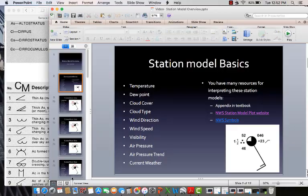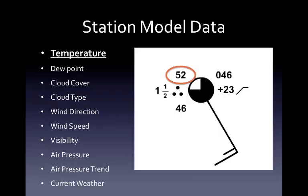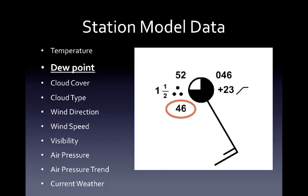To walk you through each one. On your station model, your temperature is going to be located right where you see this red circle. So 52 is going to be the air temperature at that time, which is 52 degrees Fahrenheit. The dew point you see circled here is going to be 46 degrees Fahrenheit. These are always going to be in that specific location on this station model.